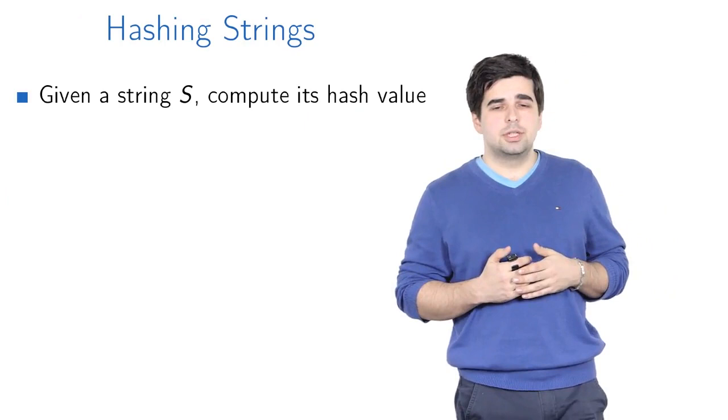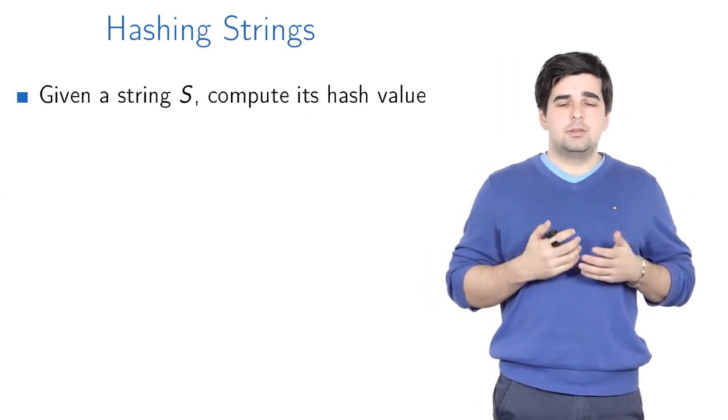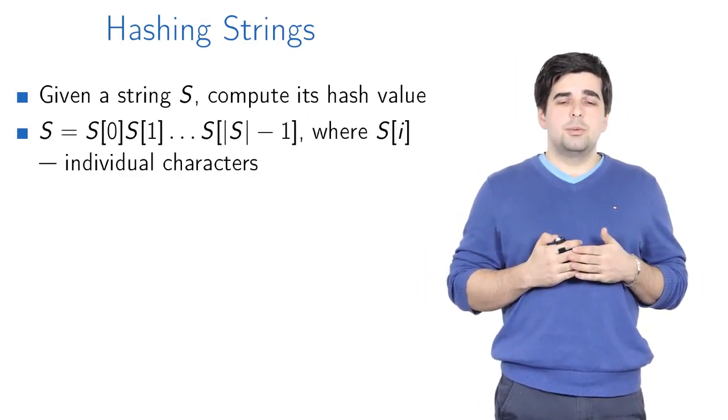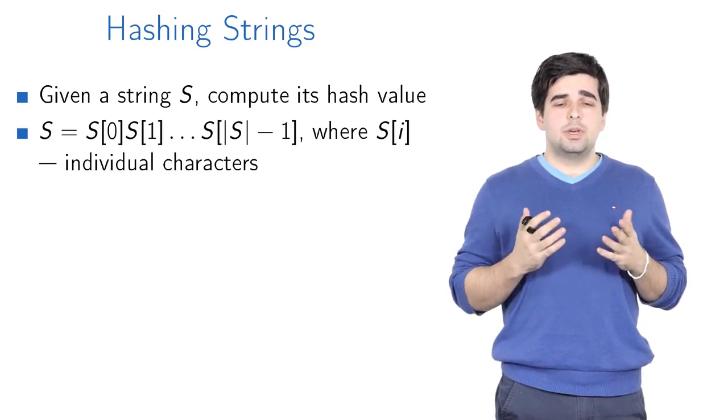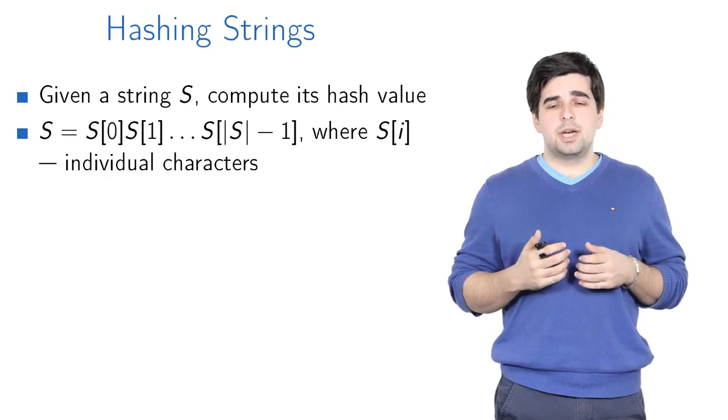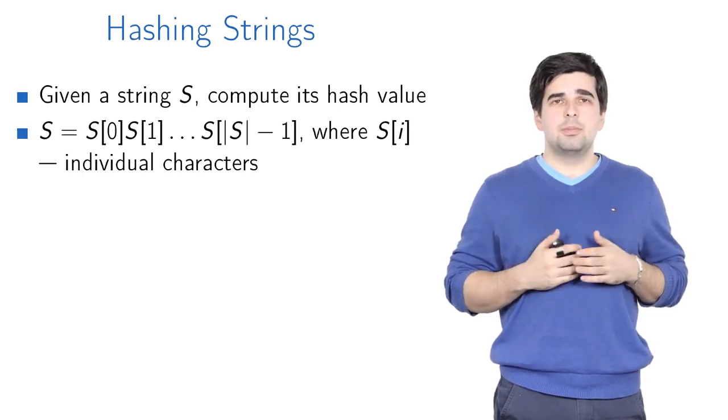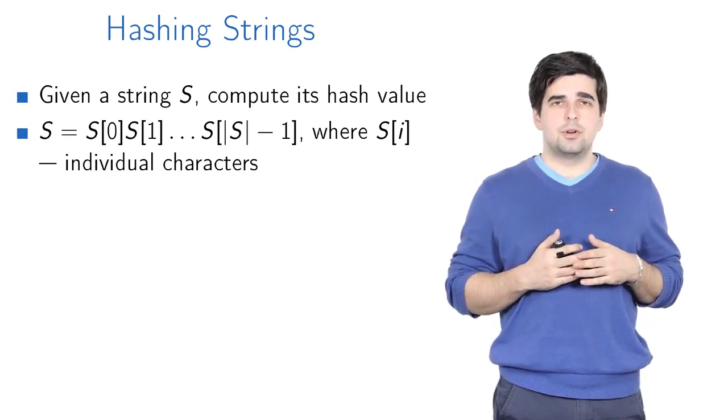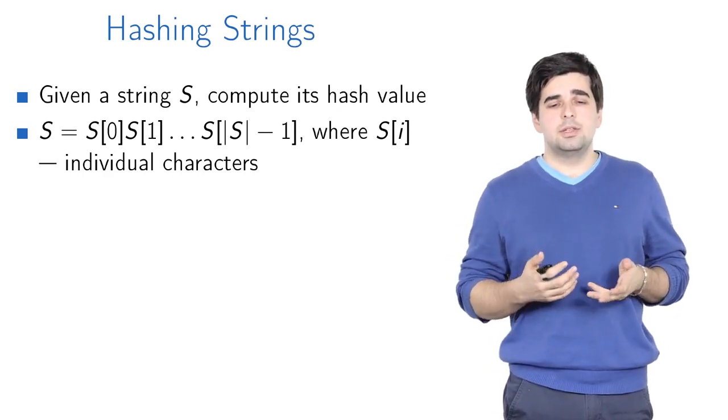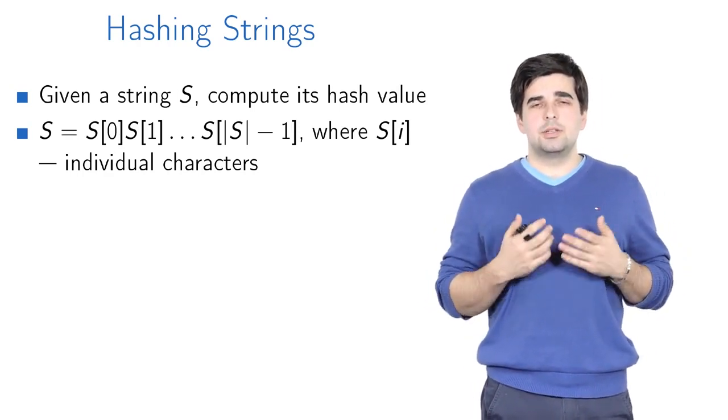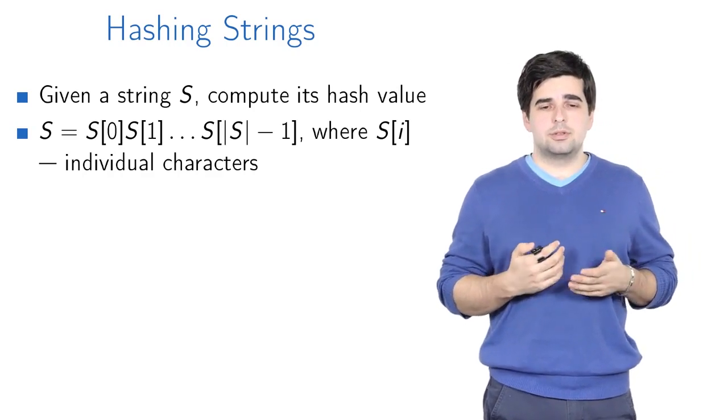So now, how to hash strings? When we are given a string, we are actually given a sequence of characters from s[0] to s[|s|-1]. We number the characters of the strings from 0 in this lecture. s[i] is an individual character that is in the ith position in the string.